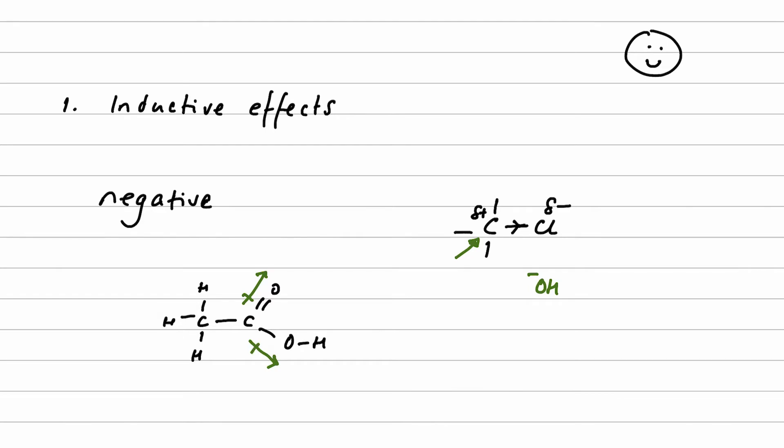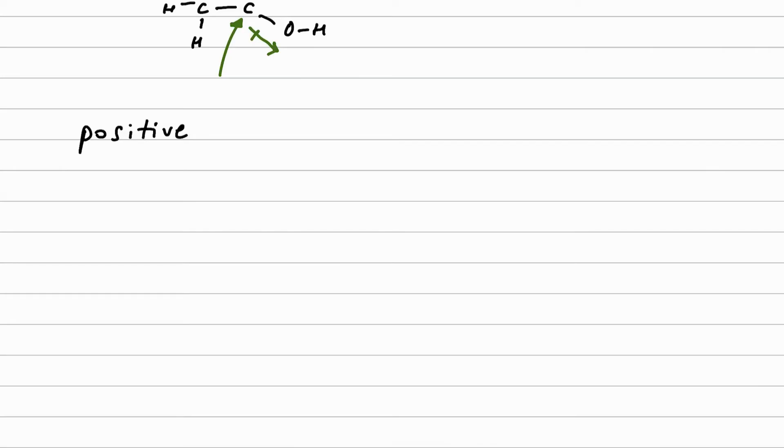So carboxylic acid group - we have got two electronegative oxygens, both of whom are pulling the electrons in the carbon-oxygen bond away from the carbon and towards themselves. So it's a negative effect as far as the carbon atom is concerned, and we end up here with a very electron deficient carbon atom. This is going to play a big role in the way that carboxylic acids react.